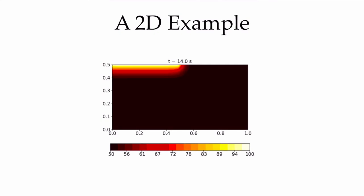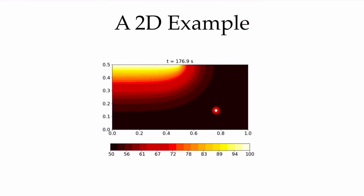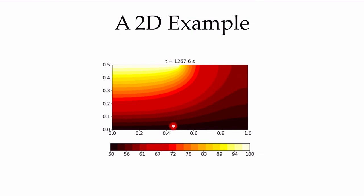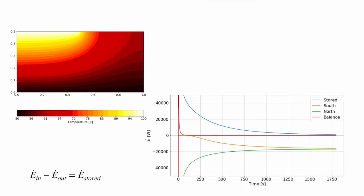Initially, energy enters from the top boundary and is stored, raising the temperature of the material. It propagates through the entire domain — you can see the insulated boundaries with contour lines perpendicular to those boundaries. As the heated region grows and turns the corner, once a temperature gradient exists at the south boundary, energy begins going out there with less going into storage. Eventually we reach the steady state where all energy entering the north boundary exits the south boundary.